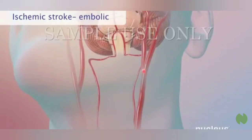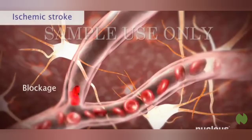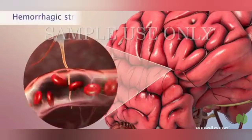In another type of ischemic stroke called an embolic stroke, a blood clot forms in another area of the body and travels through the bloodstream. If it reaches an artery near or in the brain, it can block the flow of blood, and the artery to part of the brain is blocked.